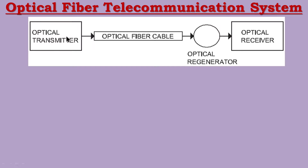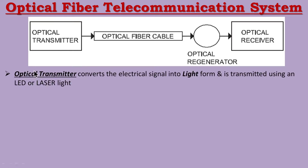The optical transmitter converts the electrical signal into light form and transmits it using an LED or laser light. The electrical signal — coming from a copper wire or antenna — is input to the optical transmitter, which converts it into a light signal.